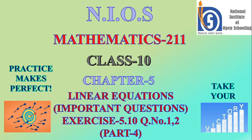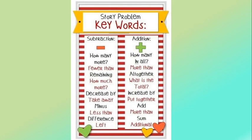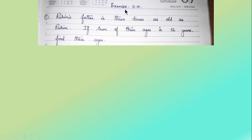Hello everyone, today we are going to learn important questions from chapter 5, linear equations, exercise 5.10, questions 1 and 2. Whenever you see certain terms in a word problem, you have to use subtraction — that is, the minus sign. And whenever you find other terms, you have to use addition — that is, the plus sign. Let's go to the question.